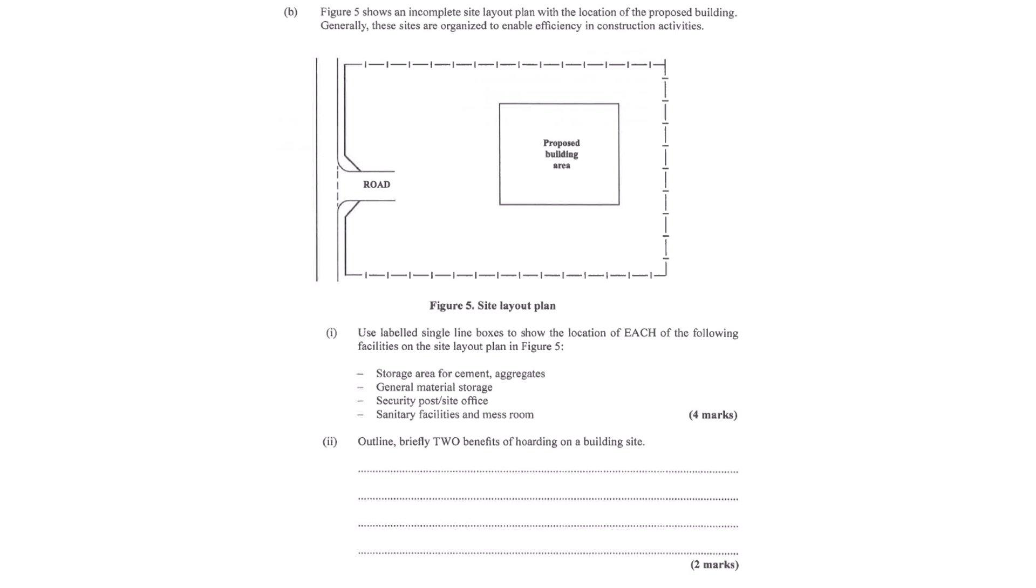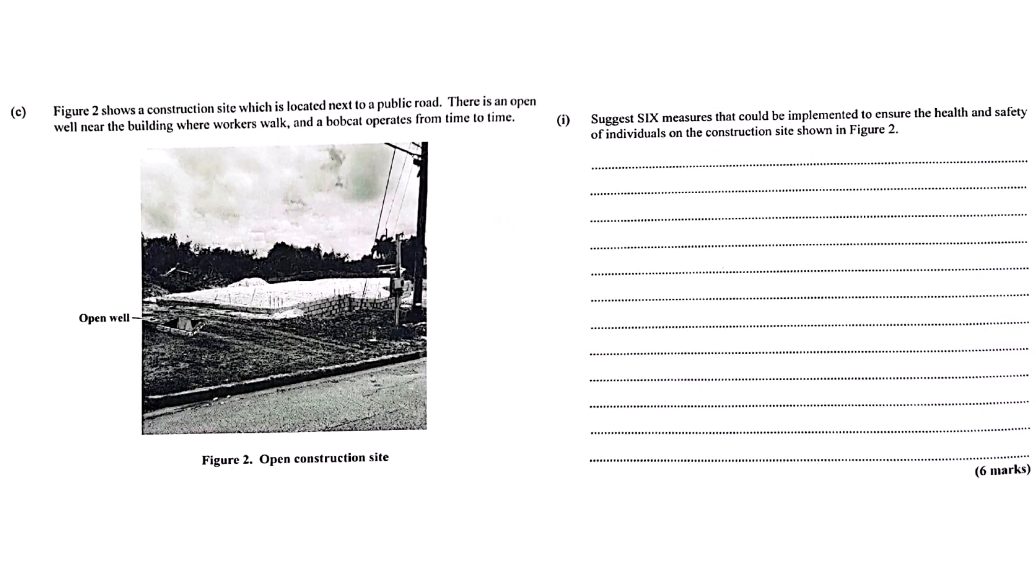The source really hammers this home with a scenario. Site next to a public road, there's an open well on site, and a bobcat zipping around. That's a high-risk setup. It asks for six safety measures. Straight away, you think fence off that well. Immediately. Non-negotiable. And have clear traffic routes for that bobcat, away from people. Yeah, traffic management is key. What else? Well, you'd need clear warning signs for the public and the workers. Definitely. High-visibility signs, alerting everyone to the hazards, the well, the machinery, the site entrance. And making sure everyone on site has their PPE, personal protective equipment. Hard hats, boots, high-vis vests. Absolutely. Basic, but essential. Maybe designated safe walking paths inside the site. Good one. Keep pedestrians separate from moving equipment as much as possible. And just securing that whole site boundary properly, especially the side facing the road. Yes. Make sure that hoarding is solid and there are no gaps someone could slip through. Control the access points, strictly.